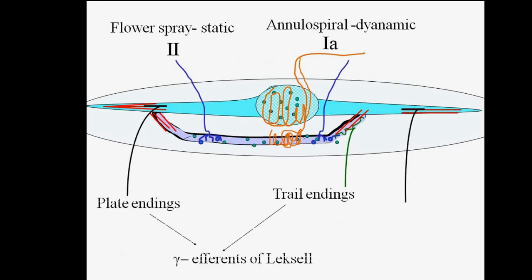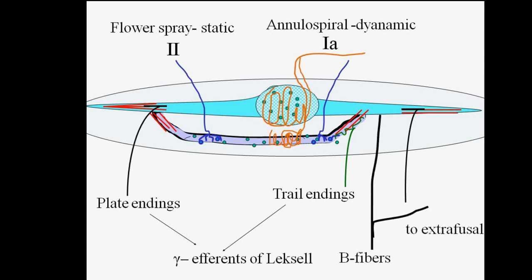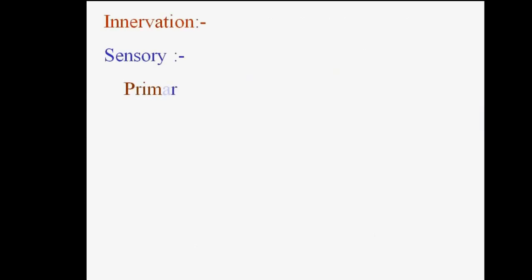This figure shows the structure of muscle spindles, where flower spray static endings, annulospiral dynamic endings, trail endings, flat endings, and gamma efferents are seen. These are the beta fibers to extrafusal fibers.